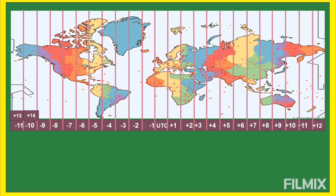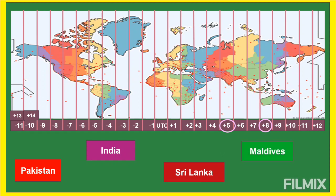Next is GMT+5, five hours ahead of UTC. The Philippines is three hours ahead on standard time, or two hours ahead if these countries observe Daylight Saving Time. These countries include Pakistan, India, Sri Lanka, and Maldives. There are still more countries under GMT+5 that can be found on the world map.